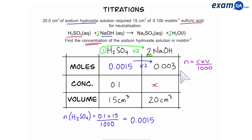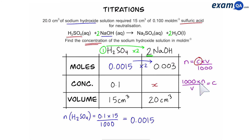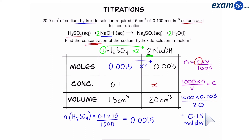Now we can use our equation. To find concentration, we're going to rearrange it — that gives us: 1000 times moles over volume equals concentration. Then plug in the values from your table. The final answer should be 0.15 moles per decimetres cubed. So you've managed to work out the concentration of sodium hydroxide.